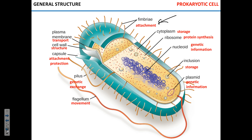Let's see what every cell must have. Not the cell wall — mammalian cells don't have one. Every cell absolutely must have: a cell membrane, a nucleoid, cytoplasm, and ribosomes. Ribosomes make proteins, and without proteins there's no cell. And surprisingly, that's it — those four things are all a cell must have.